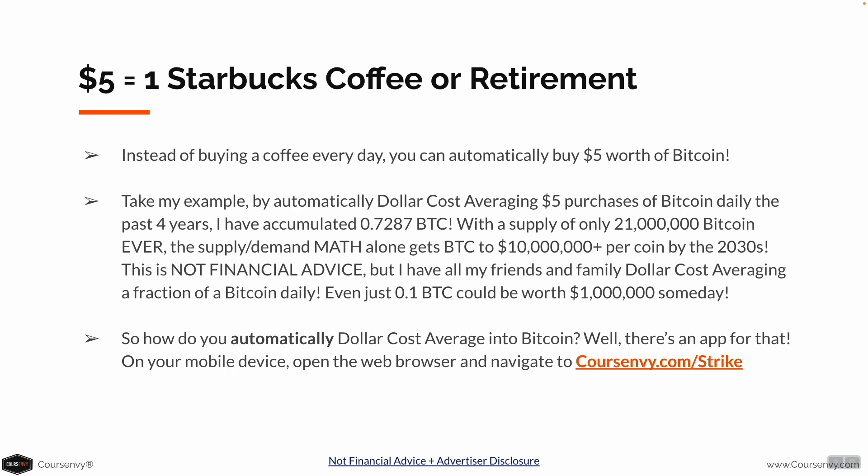Take my example. By automatically Dollar Cost Averaging $5 purchases of Bitcoin daily over the past four years, I have accumulated nearly an entire Bitcoin. With the supply of only 21 million Bitcoin ever, the supply-demand math alone gets Bitcoin to $10 million-plus per coin by the 2030s. This is not financial advice, but I have everyone I know dollar-cost averaging a fraction of a Bitcoin daily. Owning even 0.1 Bitcoin could be worth $1 million someday.